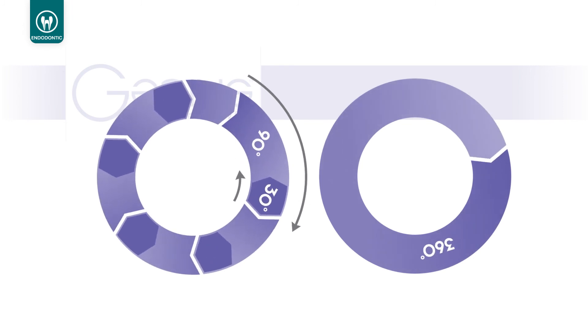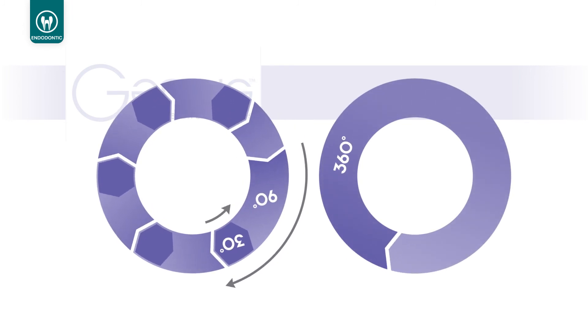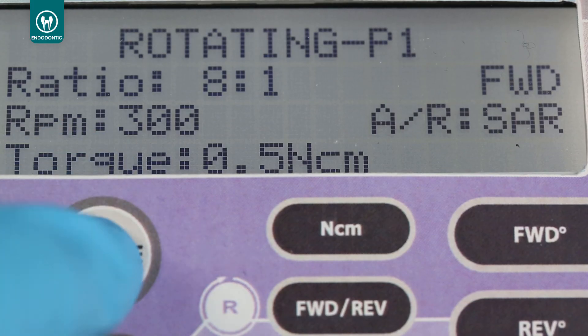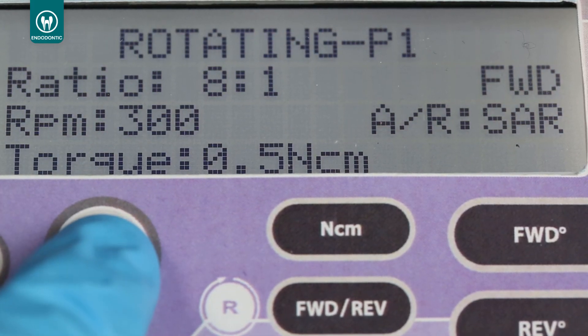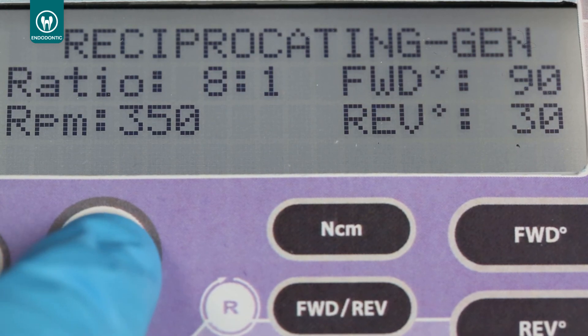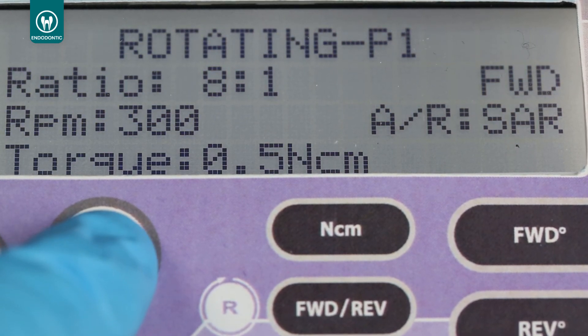And the big thing, the beauty of this system is the fact that you don't need to go from a reciprocation file to a rotary file. You can use the very same file to do everything. The genius endodontic system by Ultradent is designed to give you the benefits of reciprocation and rotation. We are very excited to introduce this to you and we know that this system will benefit you and your patients. Thank you very much.